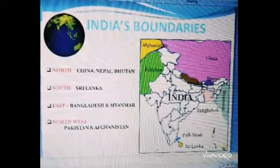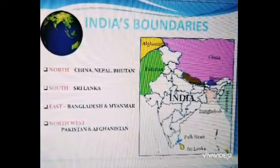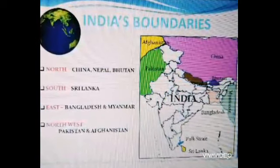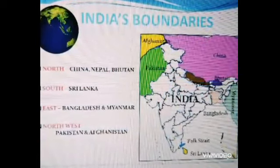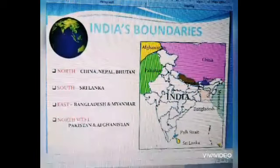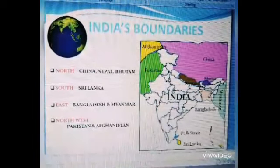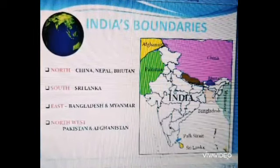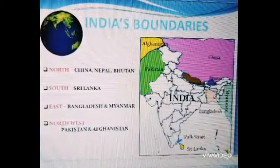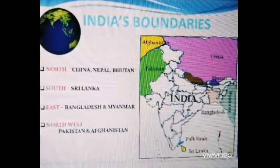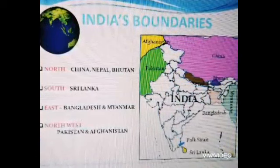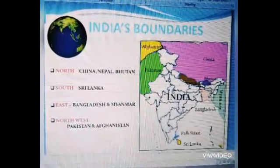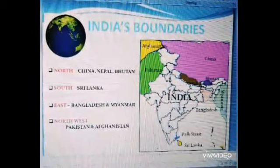Now we will see India and the world. Boundaries of India — natural boundaries: North: Hindu Kush, Karakoram and the Himalayas. South: Indian Ocean and Palk Strait. East: Bay of Bengal. West: Arabian Sea.